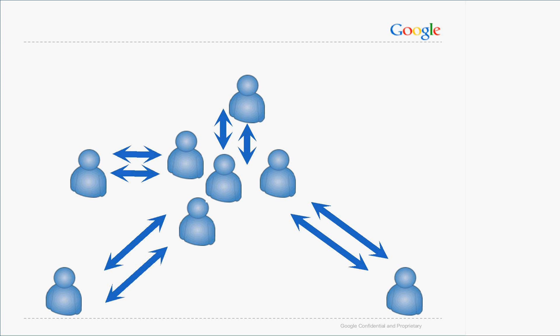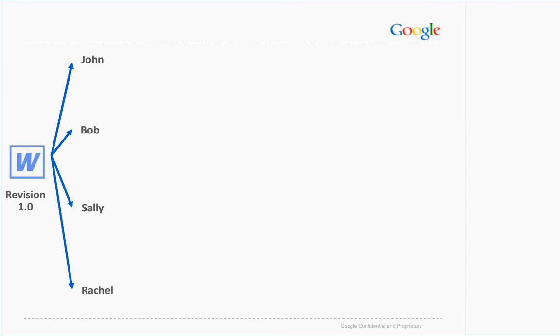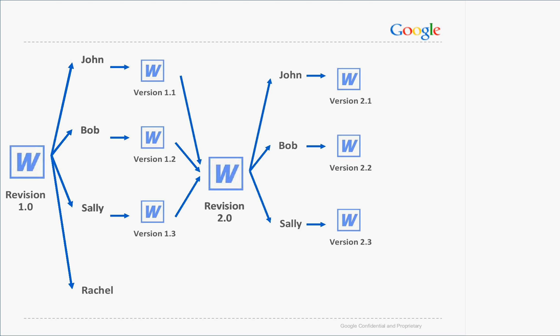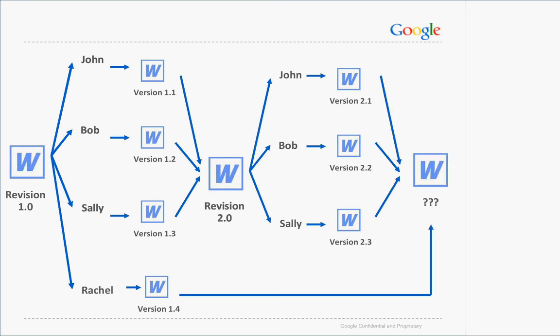Before cloud computing, students worked together on a one-to-one basis. For example, working on a group presentation: you work on one version with four other people — John, Bob, and Sally send revisions back to you, but Rachel is a latecomer and sends another revision after you've already been through two rounds. How annoying is it to go through all those attachments, compile feedback, and consolidate everyone's changes into different revisions? It just becomes a total mess.